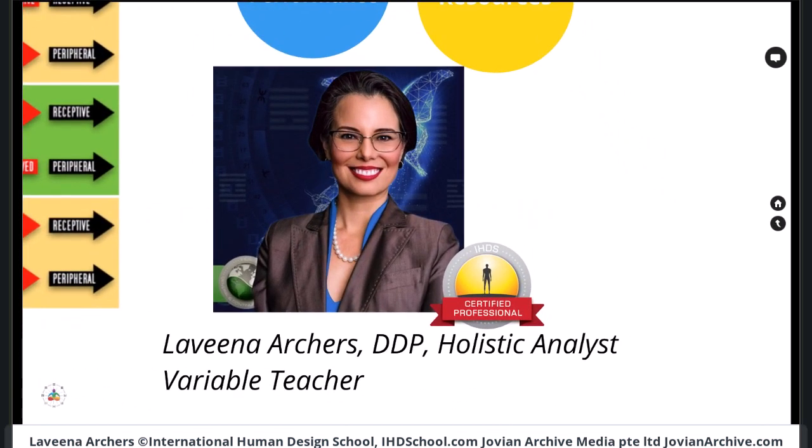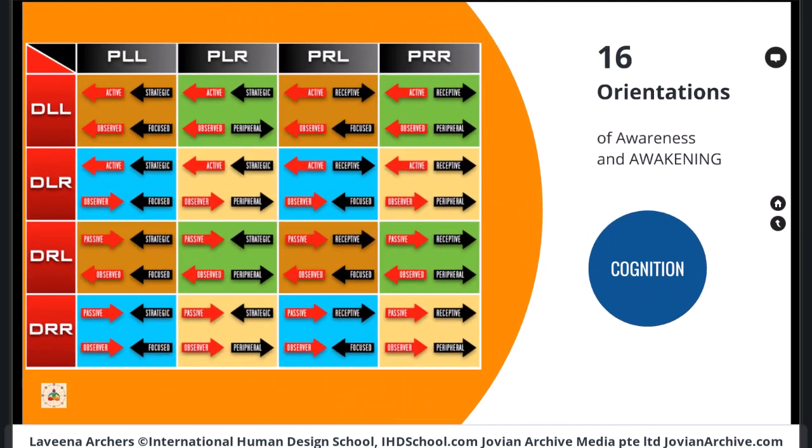When you're accurately aligned to what is correct for you, you're going to watch and witness how things unfold in a very special and utterly unique way. My name is Lavina Archers. I'm a differentiation degree practitioner, holistic analyst, and variable teacher at the International Human Design School. I want to welcome you all to this introductory presentation, where we're going to talk about the 16 orientations of awareness and awakening.